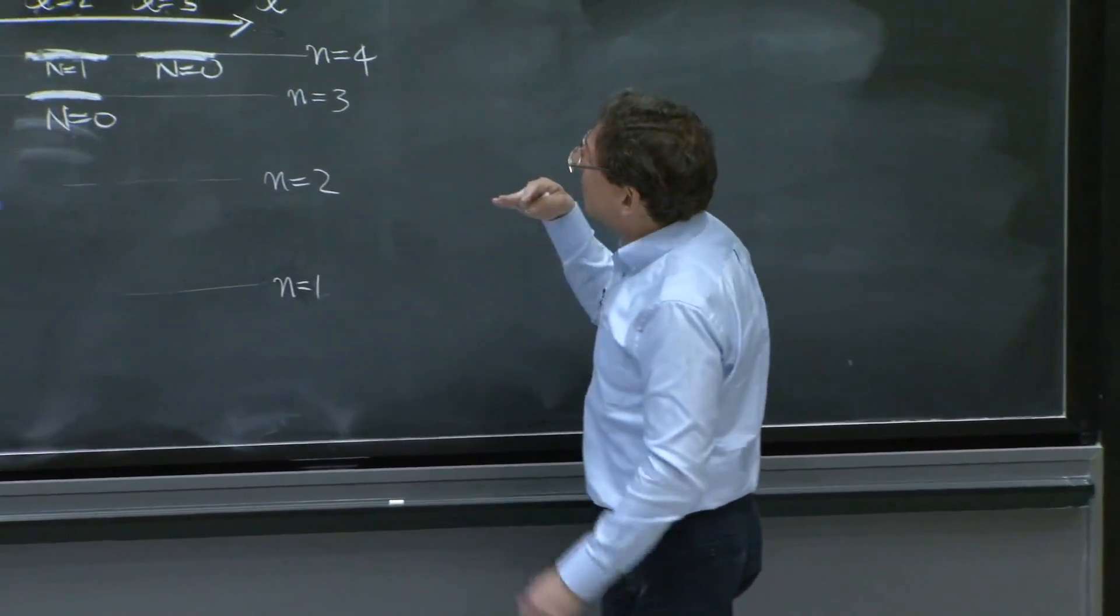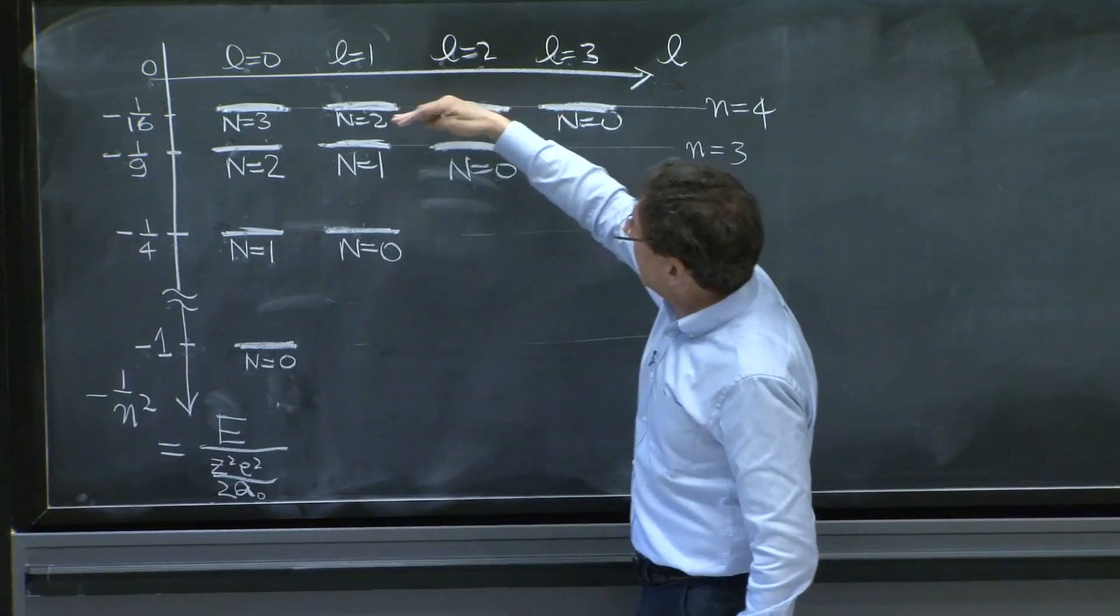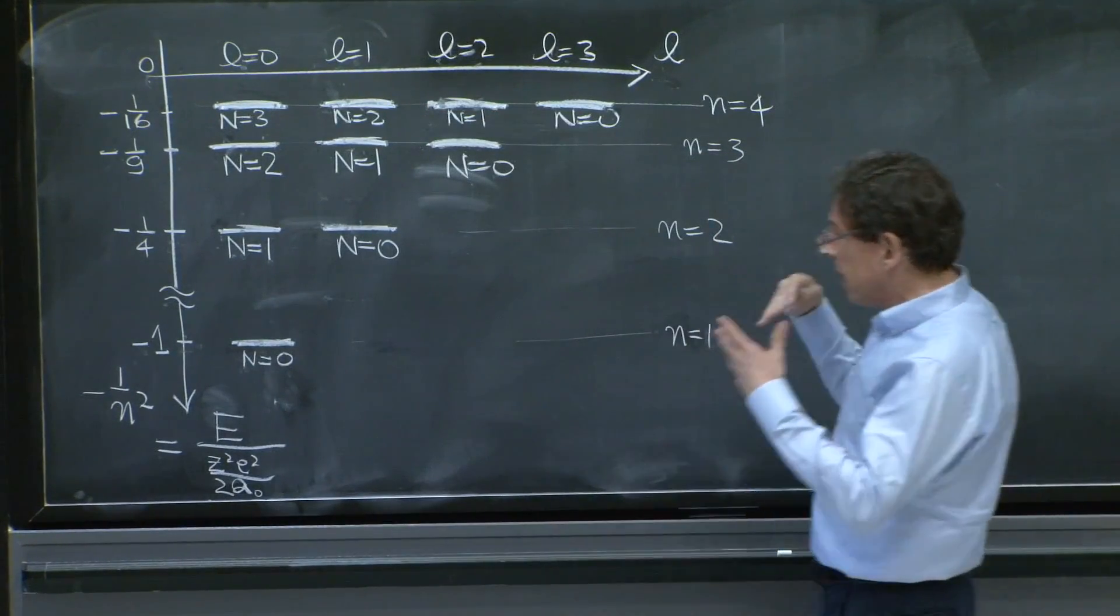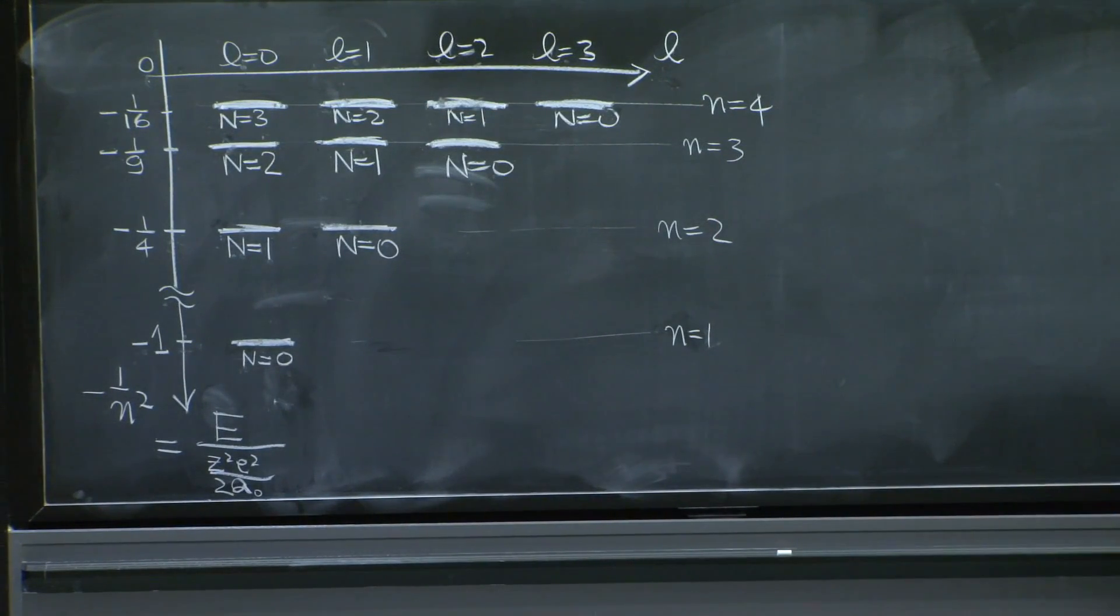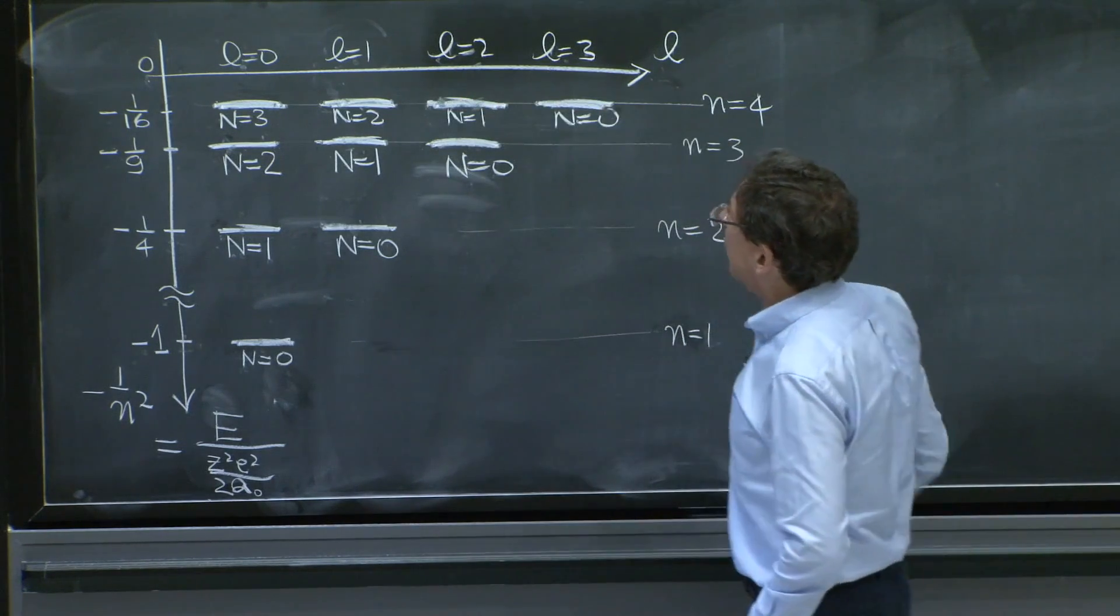And there's no precession in hydrogen atom, in a sense, as you will see. And that explains, actually, in a rather interesting way, but I'm not saying how yet, why there is this extra degeneracy.